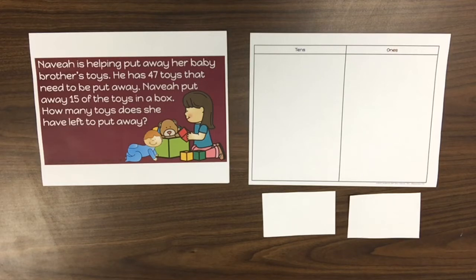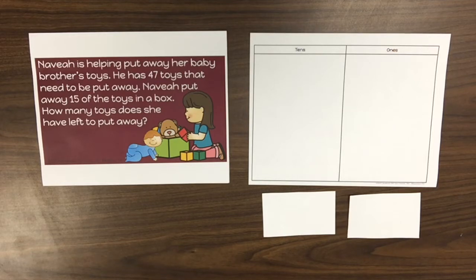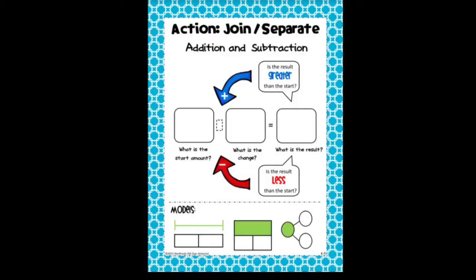For separating problems there are three quantities involved: an initial start amount, a change amount which is the part being separated, and the resulting amount which is the amount remaining after the change takes place. For this section, the result will be the focus. Refer to the join-separate word problem structure posters.